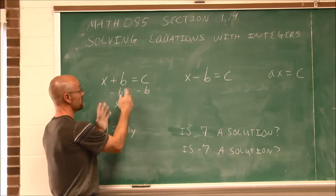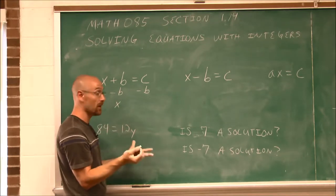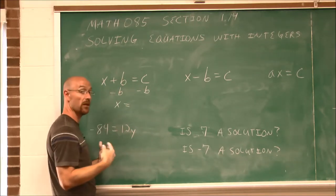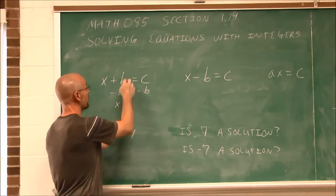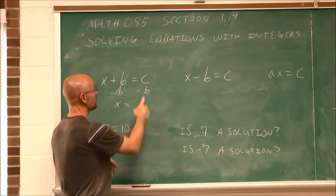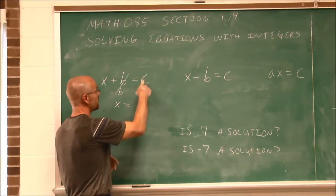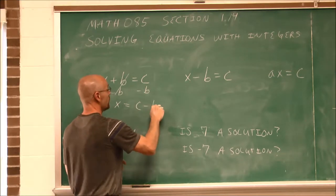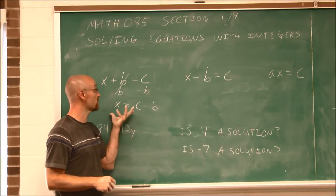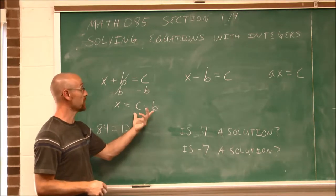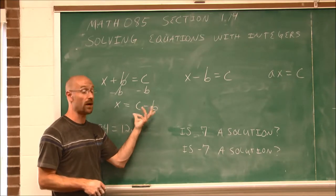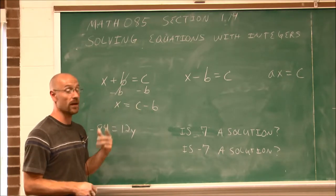Even though these are not actual numbers to work with, b minus b — any number minus itself is 0 — essentially goes away, leaving me with x on this side. On this side, I have c minus b. Whatever x is, it's going to be c minus b. So I've solved this for x. Now, if these were integers, I could do this subtraction and know what x is.